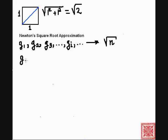It turns out that subsequent guess, guess number i, can be computed from the previous guess, guess number i minus 1. From this formula, g sub i is equal to g i minus 1 plus n over g i minus 1 divided by 2. Essentially, the average of g i minus 1 and n over g i minus 1.